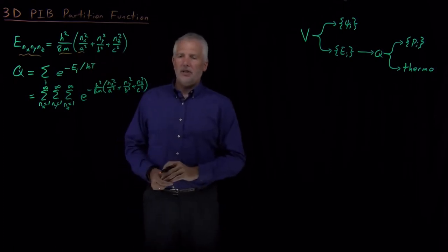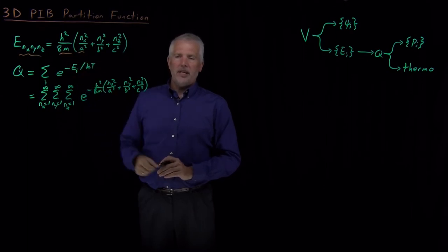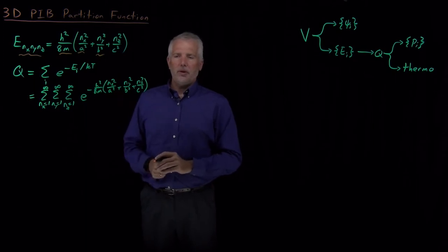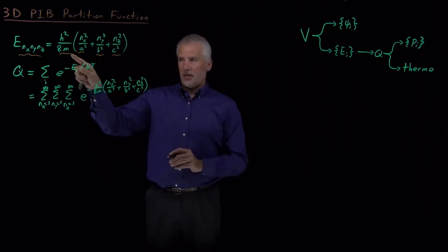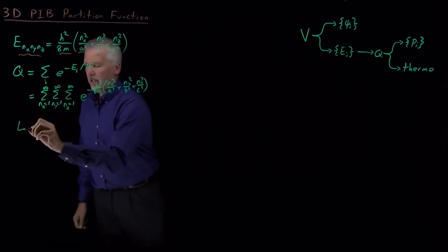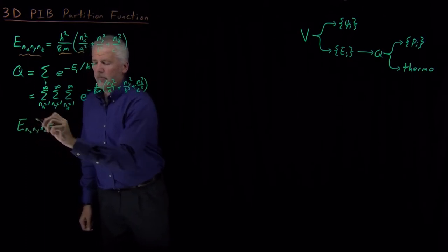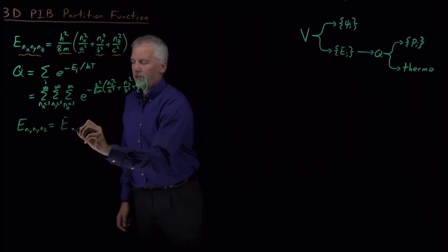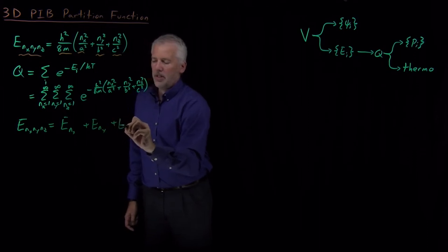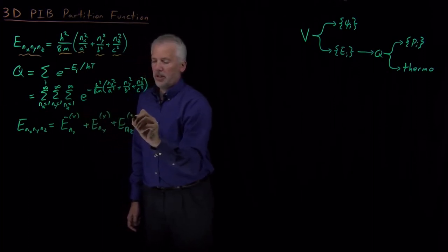One term for the x portion of the energy, so these constants times nx squared over a squared, that's the energy in the x direction. Another term, constants times ny squared over b squared for the y direction, and a third term, constants times nz squared over c squared for the z direction. So if we notice that 3D particle in a box energy can be written as the sum of one piece for x, and one piece for y, and one piece for z. And so this is the x contribution, the y contribution, the z contribution.